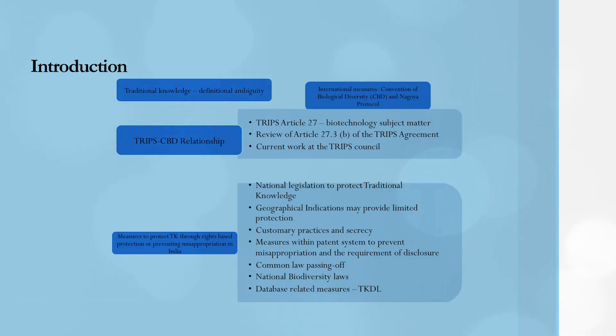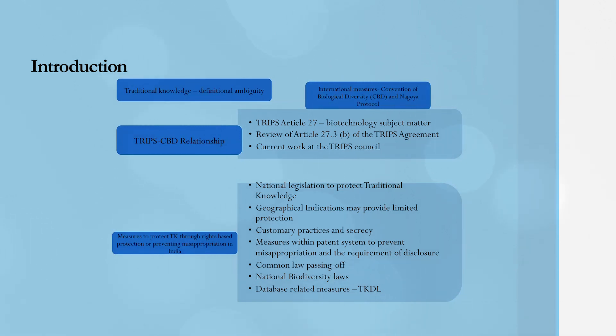At the same time, there are certain exclusions that can be provided. Furthermore, Article 27 also requires a review of that particular provision. We are going to discuss all of it in this module. We will also look at some of the measures that India has taken to protect traditional knowledge including associated biodiversity, and how both positive protection and misappropriation-prevention regimes are structured in India.